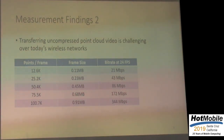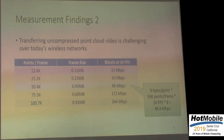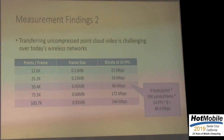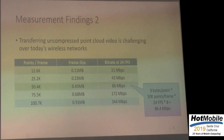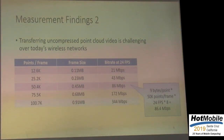Let's look at an example. If we have 50K points per frame, you can easily calculate the required bandwidth. For each point you need at least nine bytes: X, Y, Z at two bytes each, and R, G, B at one byte each. Multiply by 50K points, then multiply by 24 FPS, and you get almost 90 Mbps. So this is really challenging.